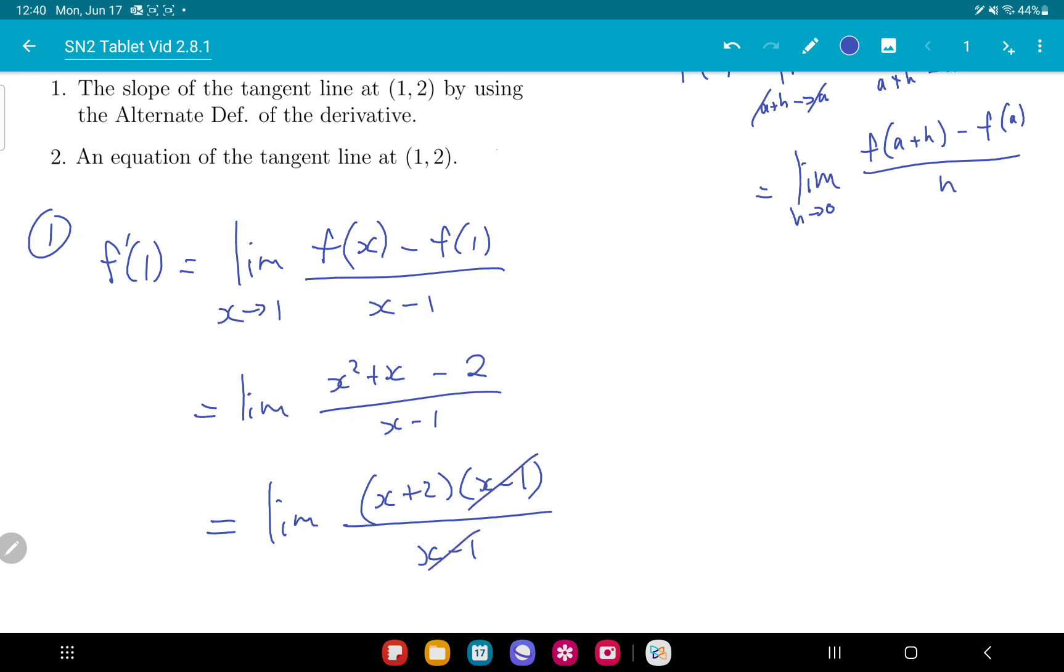Yeah, cancel, cancel. You get limit of x plus two. Now, x is going to one, so my limit is three. And this is my slope.